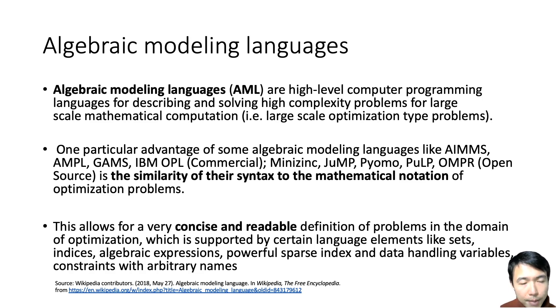We have some commercial AML such as AIMMS, AMPL, GAMS, IBM OPL. We also have some open source ones such as MiniZinc, JuMP for Julia, Pyomo for Python, PuLP also for Python, and OMPR for R. AML allows for very concise and readable definition of problems in the domain of optimization. It supports elements such as sets, indices, expressions, and sparse indexing.